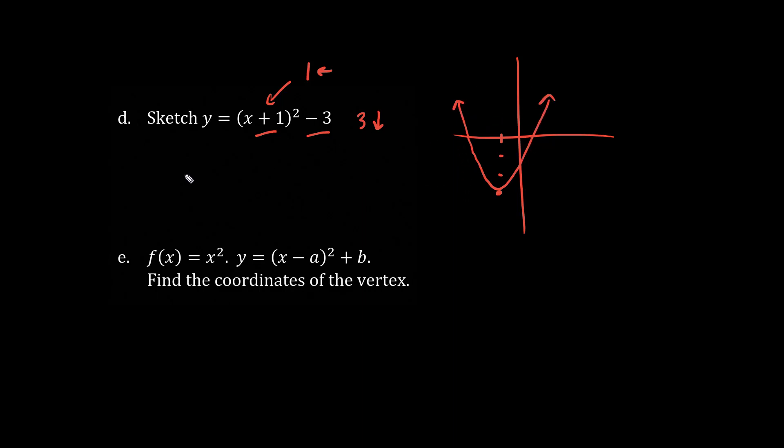If you really want to find the intercepts, we could. Let's find the y-intercept by setting x = 0. So y = (0 + 1)² - 3. We have 1² = 1, minus 3 is -2. So this intercept is -2.